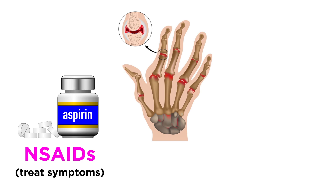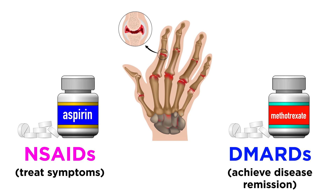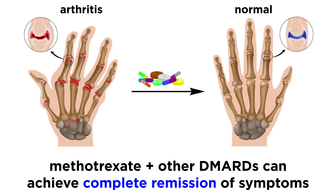Unlike NSAID drugs such as aspirin, which only treat symptoms of RA, methotrexate is a disease-modifying anti-rheumatic drug, and significantly lowers inflammation to a state that achieves or at least approximates disease remission in many RA patients. In patients with high disease activity, physicians often prescribe methotrexate in combination with other non-biologic DMARDs to achieve the complete remission of symptoms.